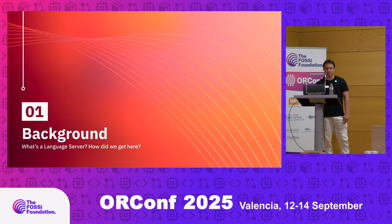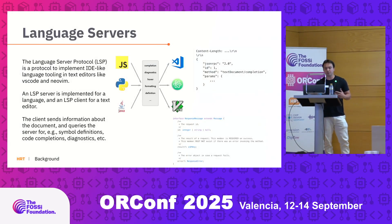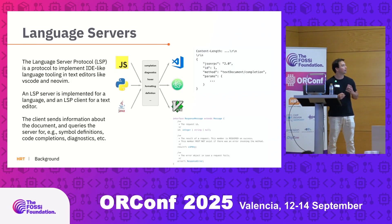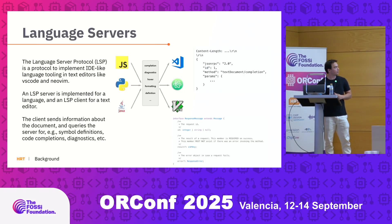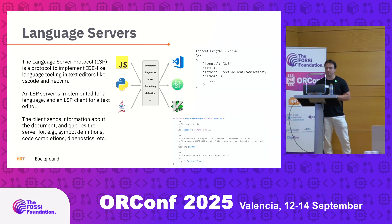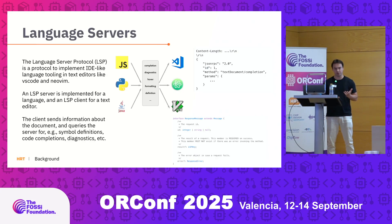So a little bit of background. What is the language server and how do we get here? The language server protocol is a protocol to implement IDE-like features agnostic of the editor — VS Code, NeoVim, Sublime. An LSP server is implemented for a language and an LSP client for a text editor. It's implemented over JSON RPC over any transport, typically just standard in, standard out. You could also do TCP and some others.